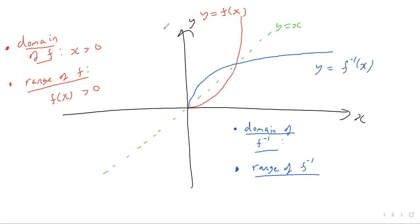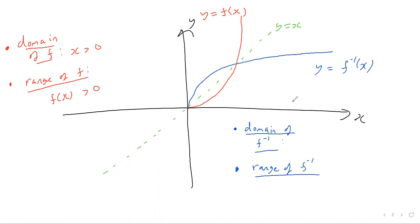We know the domain of the red line y equals f(x) is x greater than zero, because we were told that in the question. And we can see from the graph that the range is f(x) greater than zero — the x squared graph goes up to infinity, so the range of y values goes from zero all the way up to infinity.